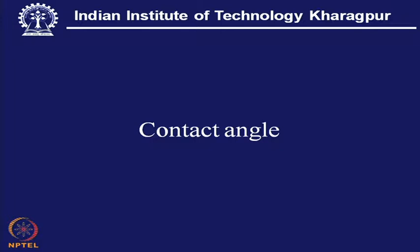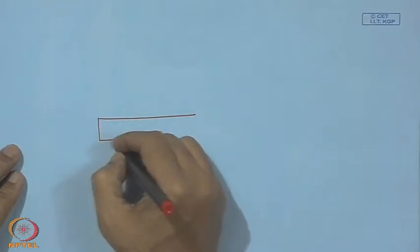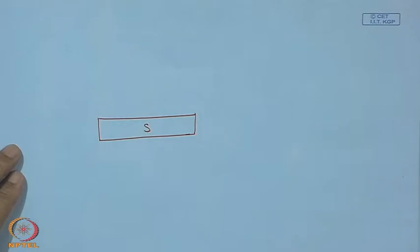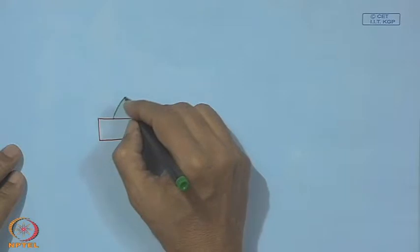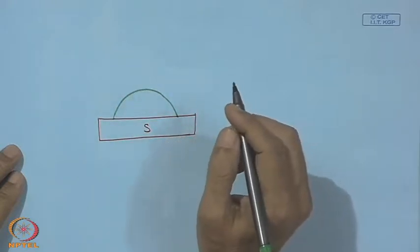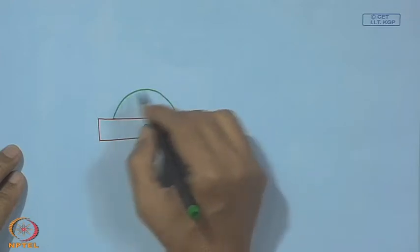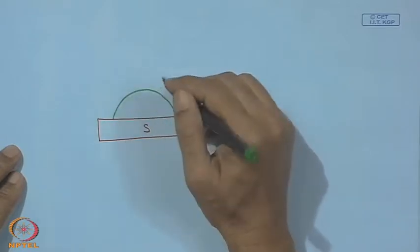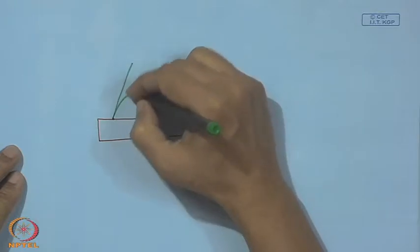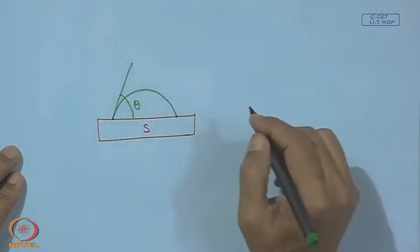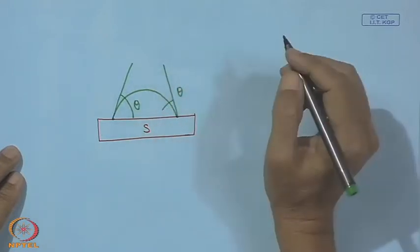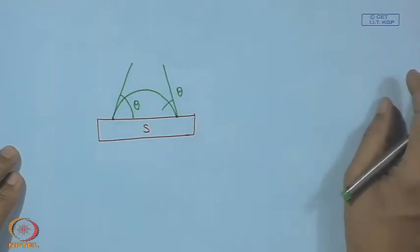More important here is the term contact angle, by which we can assess the degree of wetting of a liquid over a solid surface. When the liquid is in equilibrium with the solid surface making a part-sphere shape, we can draw a tangent at the contact point and the angle theta is called the contact angle. This contact angle is a measure of wetting.